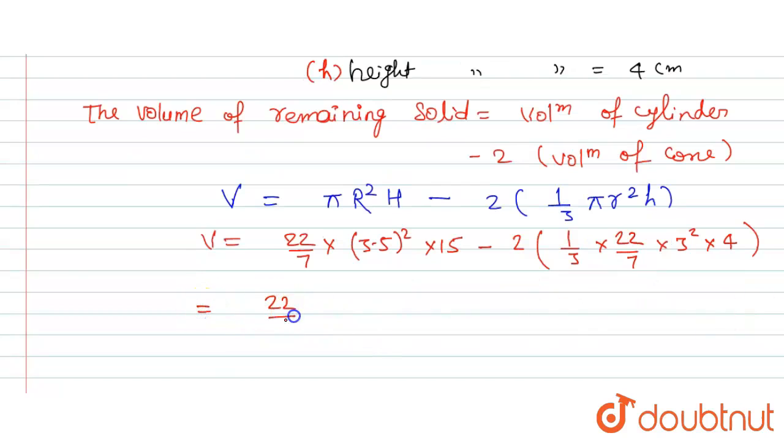22/7 times 3.5 squared is 12.25, times 15, minus 2 times 1/3 times 22/7 times